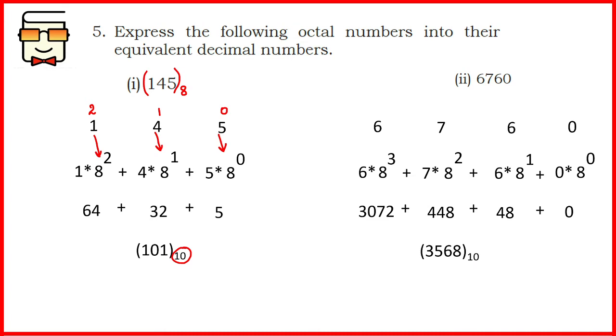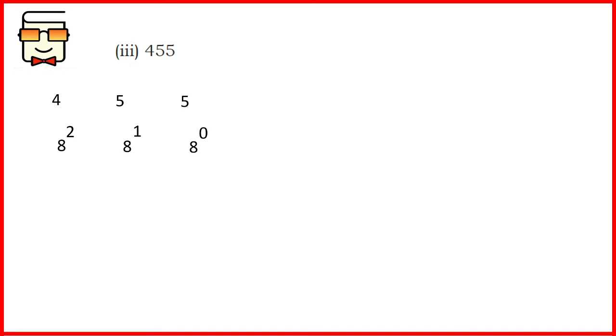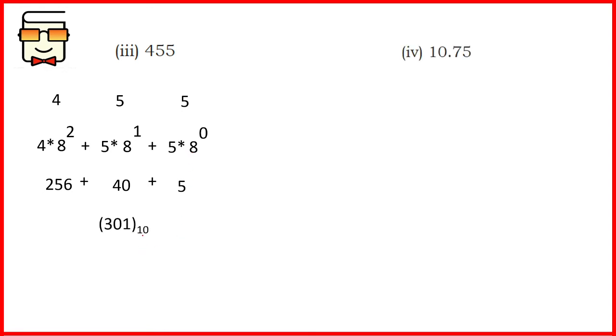If you have any confusion or problem, feel free to mention it in the comment section — we will definitely get back to you. Coming to the third part: the same procedure applies. The digits are 455, so 4 is multiplied by 8 to the power 2, 5 is multiplied by 8 to the power 1, and the last digit is multiplied by 8 to the power 0. Simplifying, you get the final answer as 301 in decimal.